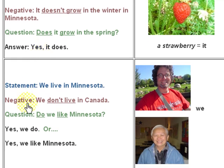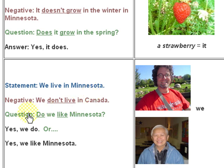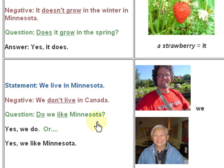Now we have a statement with two people, which is 'we.' Two people or more is 'we.' Statement: 'We live in Minnesota.' The negative: 'We don't live in Canada.' And the question: 'Do we like Minnesota?' Yes-no answer: 'Yes, we do.' Or you can say: 'Yes, we like Minnesota.'